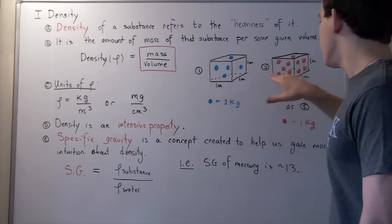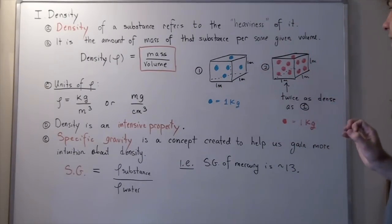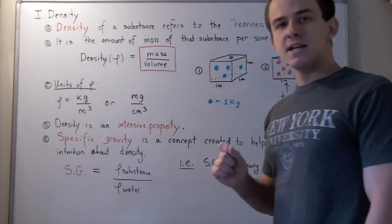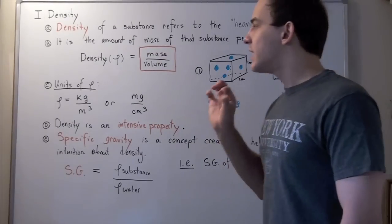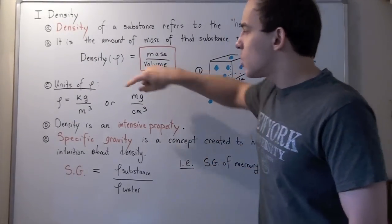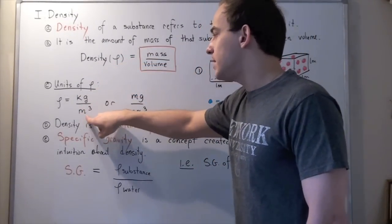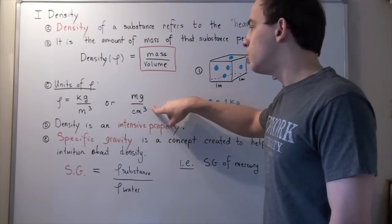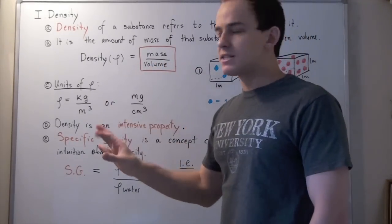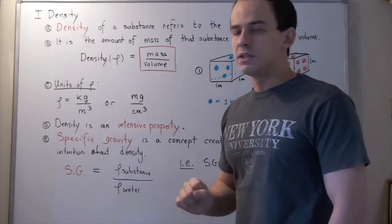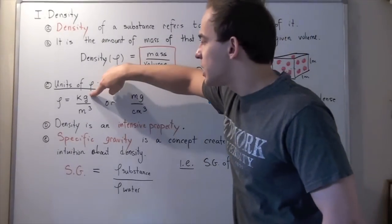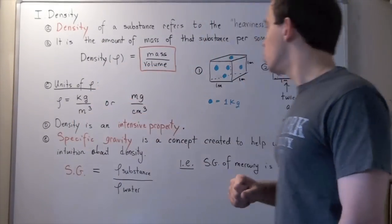My volume in both cases is the same. Now, before we find the difference, let's look at the units of our density. There are two very commonly used units: kilograms per meter cubed, or milligrams per centimeter cubed. Other units exist, but these are the most commonly used. In this case, we're going to use kilograms per meter cubed.